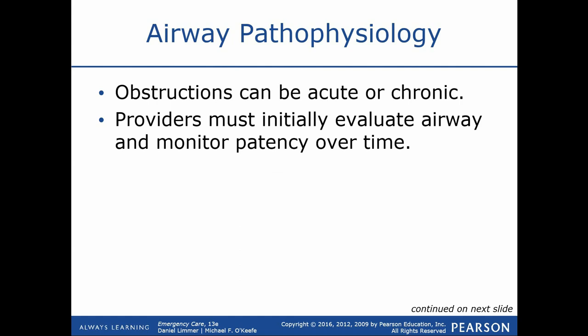Obstructions can be acute — sudden onset, a one-time incident — or chronic, meaning ongoing. Patients with emphysema, for example, often develop mucus inside the lungs along with some bronchoconstriction — these are chronic obstructions. Whether the obstruction is something someone is choking on in the upper airway or mucus occluding the lower airway, we view it as a general airway obstruction. Upper airway sounds I can manage by repositioning or suctioning; lower airway mucus requires medication to dilate the bronchioles.